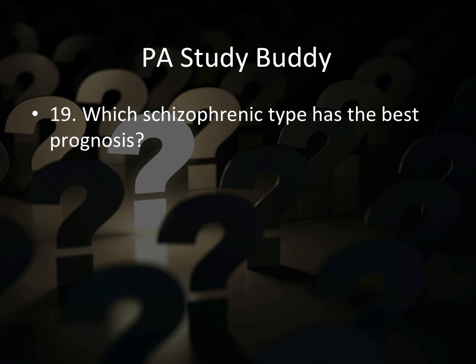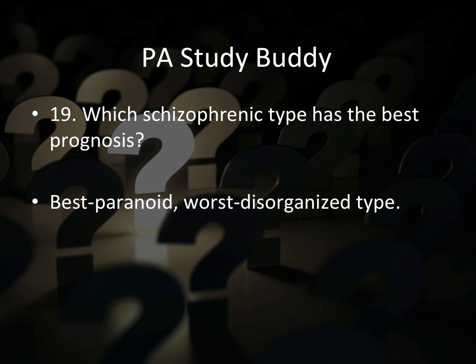Question nineteen: which schizophrenic type has the best prognosis? They'll list all different types and ask which patient has the best chance of a good outcome. The best prognosis is for the paranoid type, and the worst is disorganized type. Or the question may be vice versa — which has the poorest prognosis? That would be disorganized.